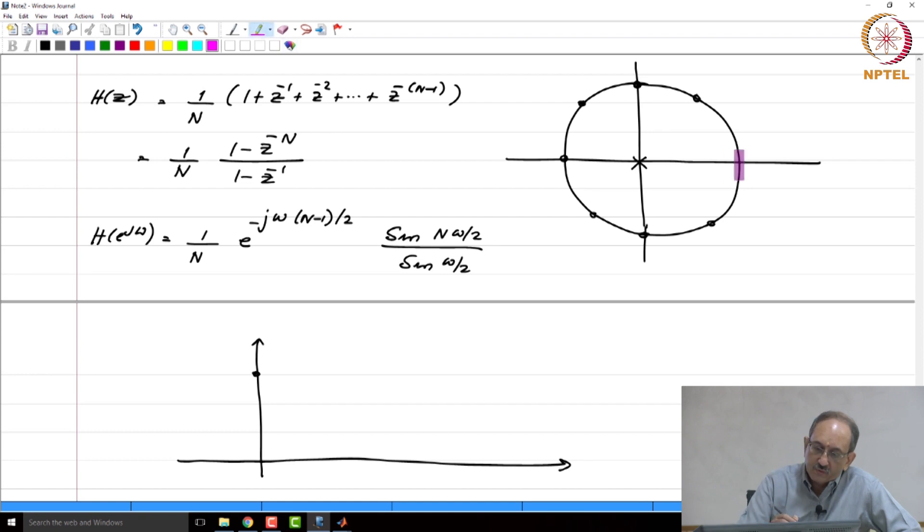And then from this point, when you move across the unit circle, when you approach this 0, the response will fall down. And when you hit the first 0 as shown here, the response will go to precisely 0. And then similarly, when you cross this, you will hit a peak somewhere in between and then hit the next 0 when you approach this, and hence the response will look like this. This is how the response will look.